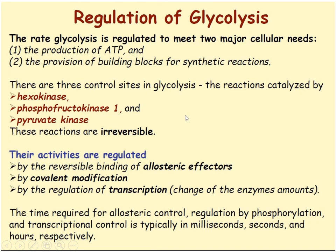The rate of glycolysis is regulated in the cell to meet two major needs: ATP production and the provision of building blocks for synthetic reactions. When the cell needs more ATP, it accelerates glycolysis; when less ATP is needed, glycolysis slows down. There are three control sites: the reactions catalyzed by hexokinase, phosphofructokinase, and pyruvate kinase — the three irreversible reactions. Glycolysis can be regulated by reversible binding of allosteric effectors, covalent modification, or regulation of transcription.